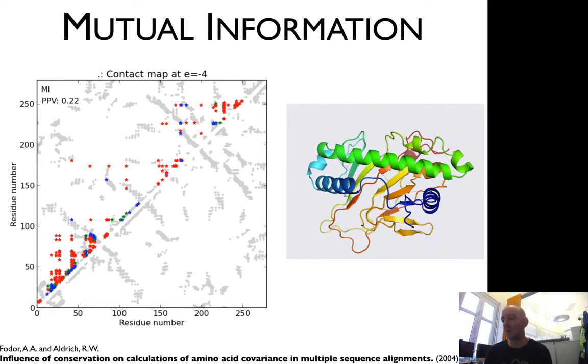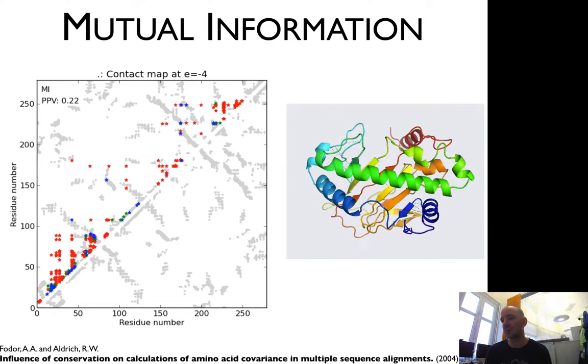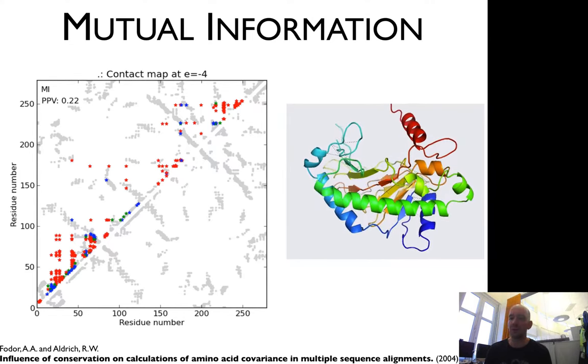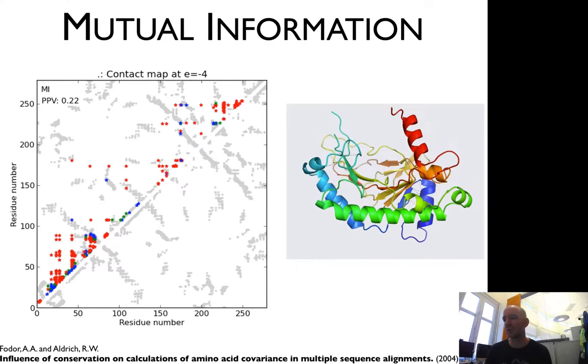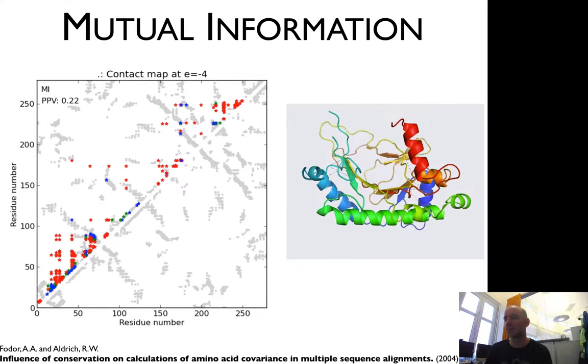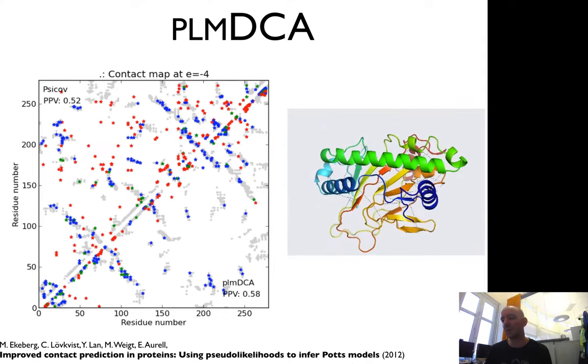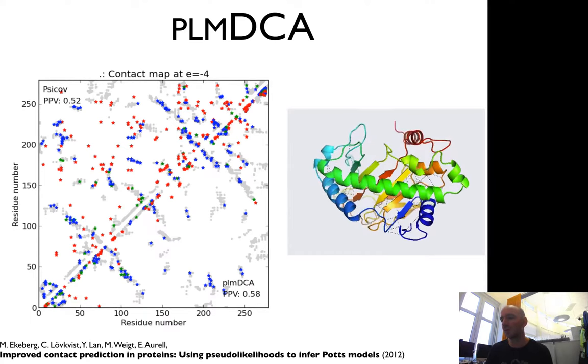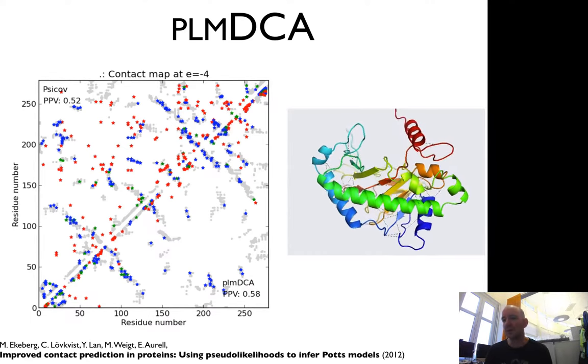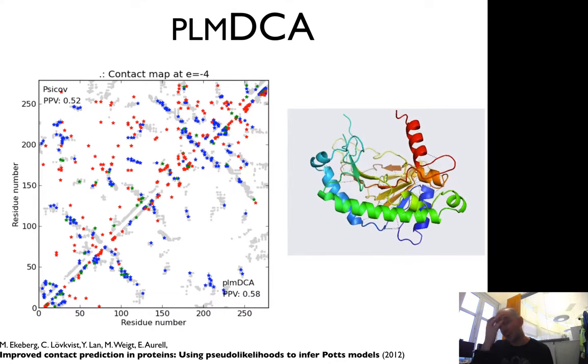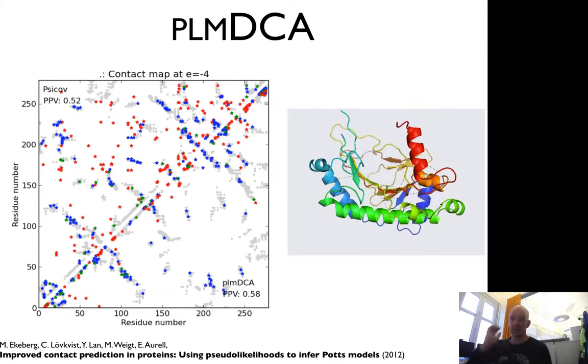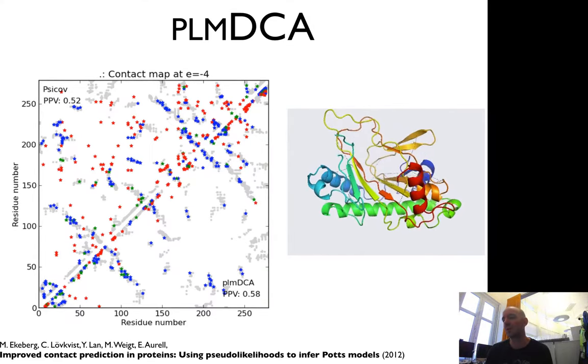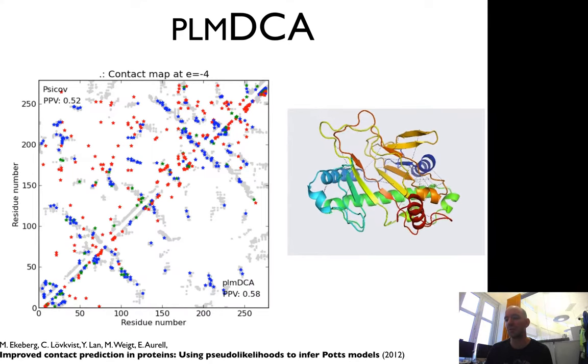To show how well this works, look at what happens with contact maps. This contact map in terms of mutual information shows a few blue contacts predicted correctly, but most are red or wrong, with basically no long-range contacts—only 22% correct. If you use PLMDCA or GREMLIN instead, about half the contacts are correct. These two methods use the global model, and you see useful long-range contacts. You can actually predict the structure of this protein using these contacts.